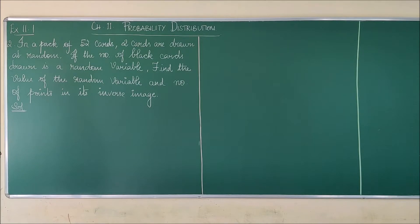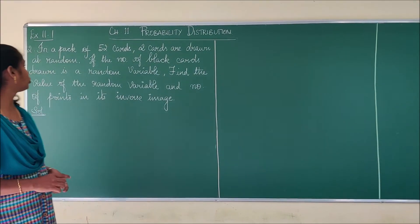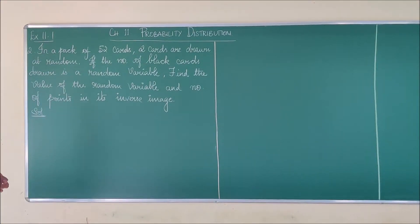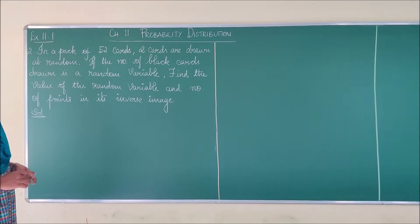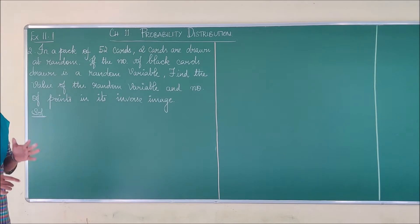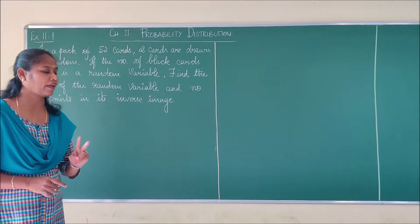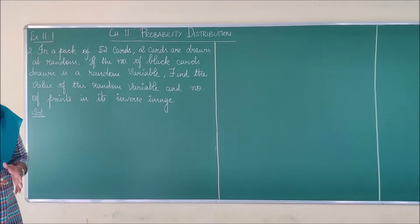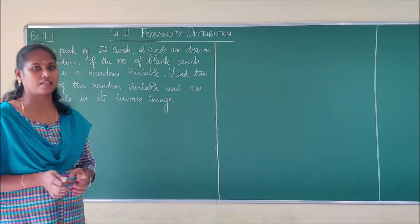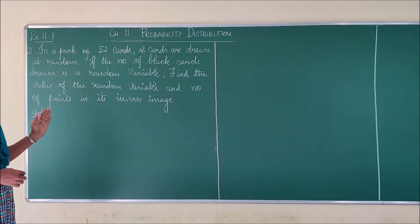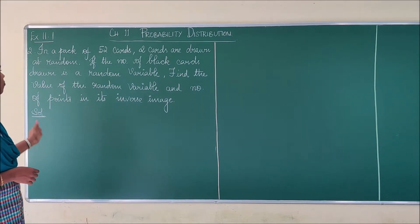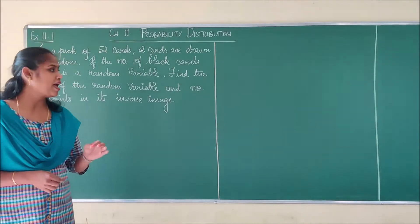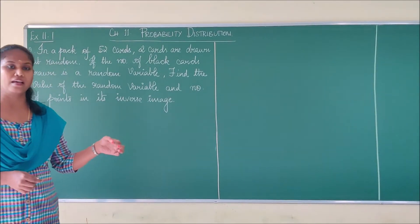Good morning students. Next we are going to see problem number 2 of exercise 11.1 from probability distribution. I am going to read the question now: from a pack of 52 cards, 2 cards are drawn at random. If the number of black cards drawn is the random variable, you have to find the values of the random variable and the number of points in its inverse image.